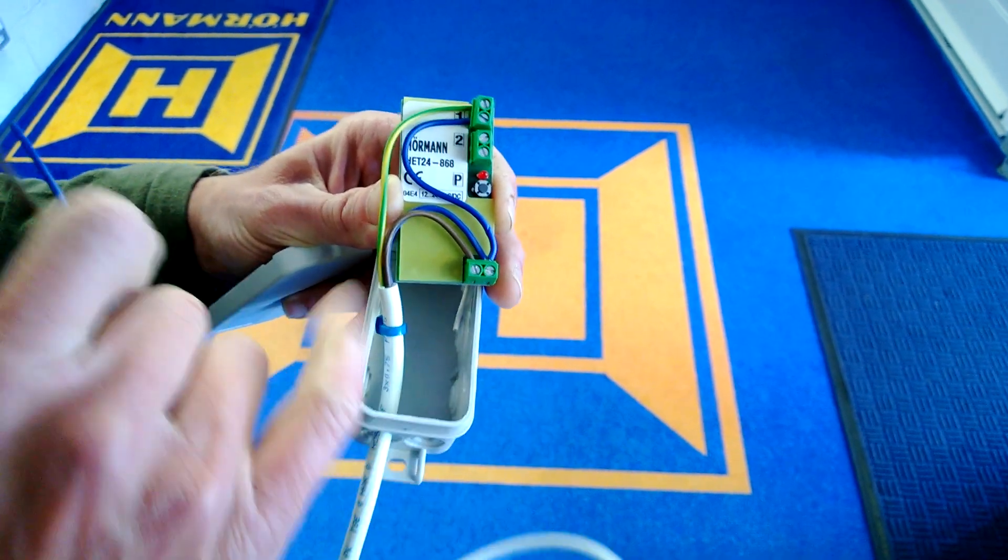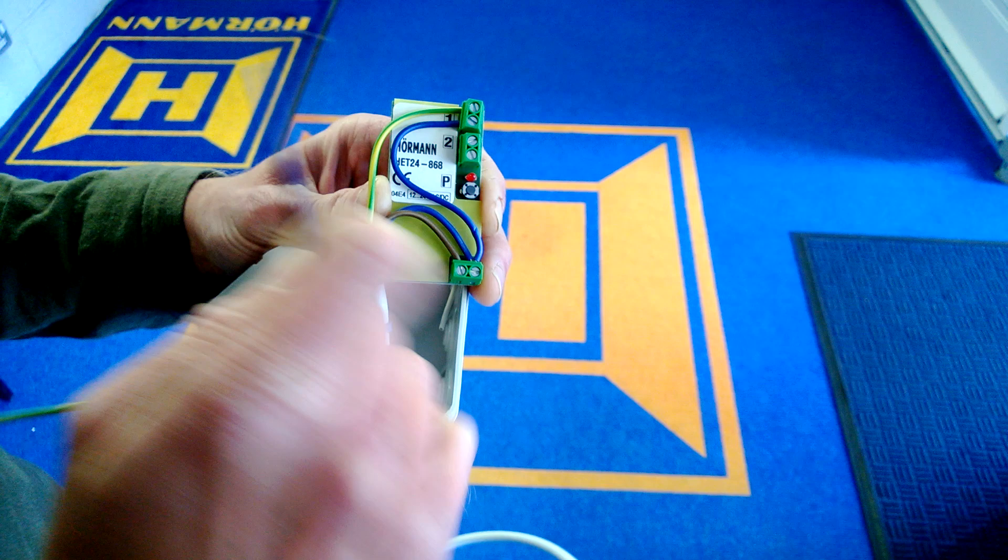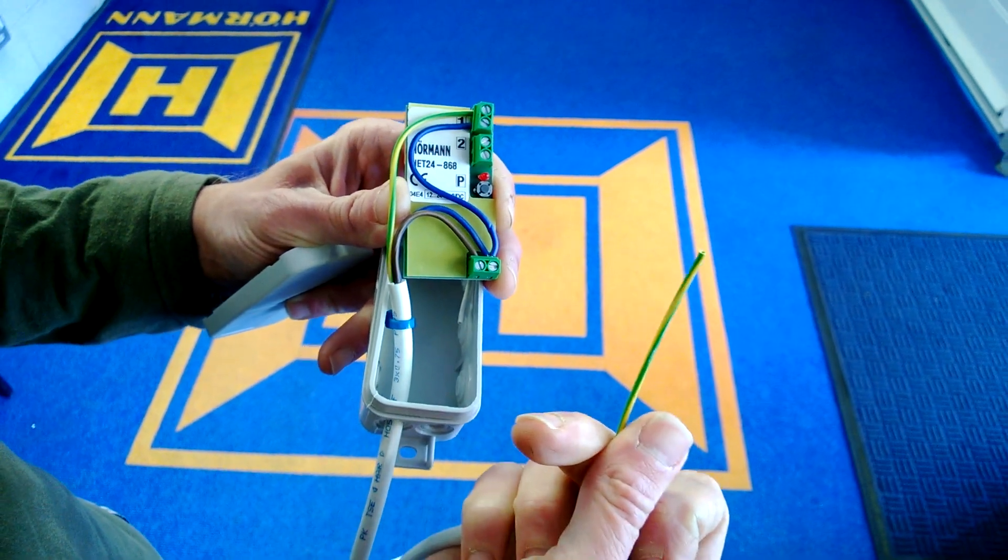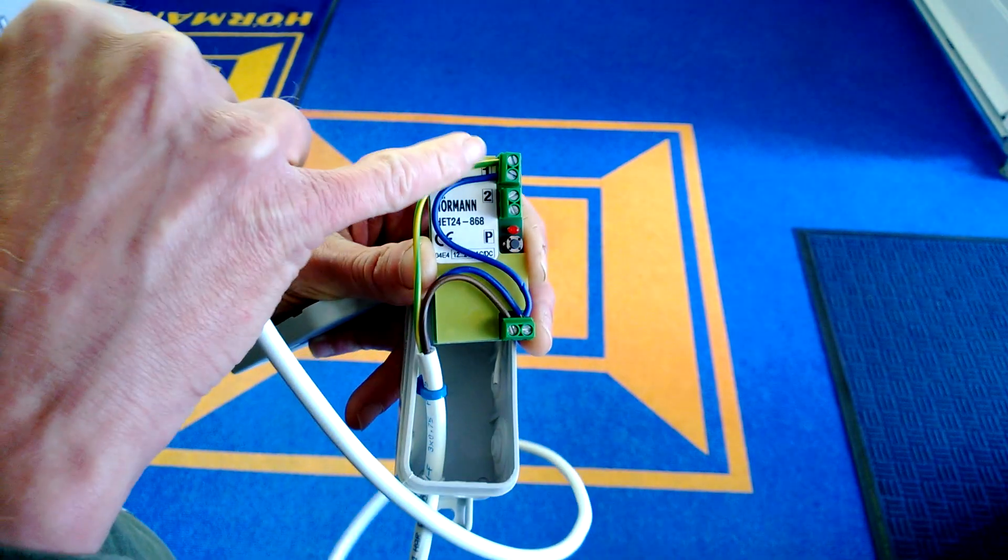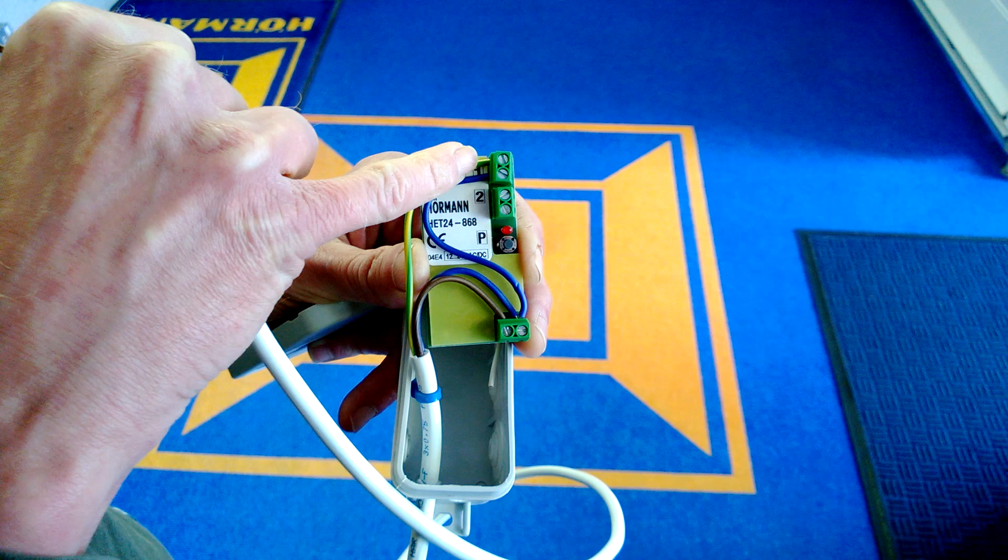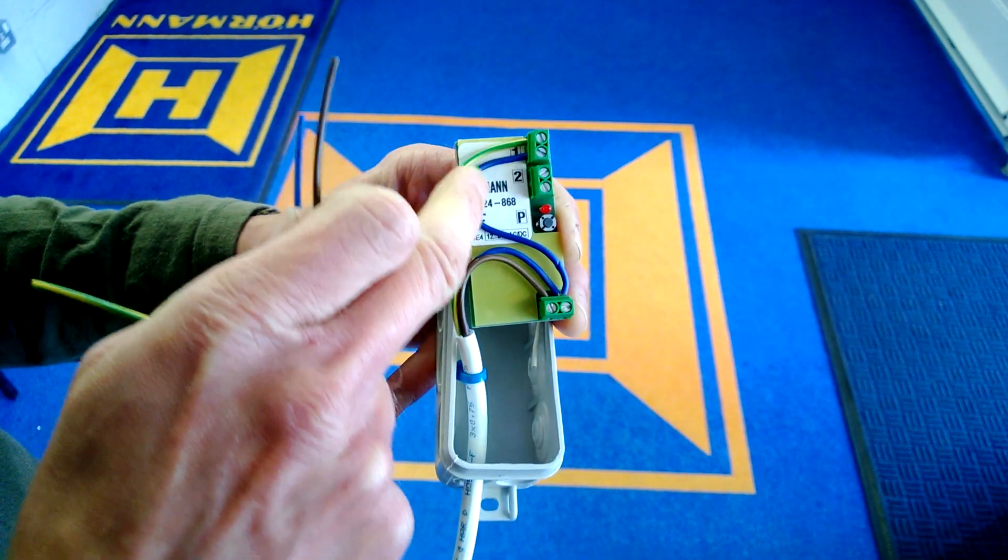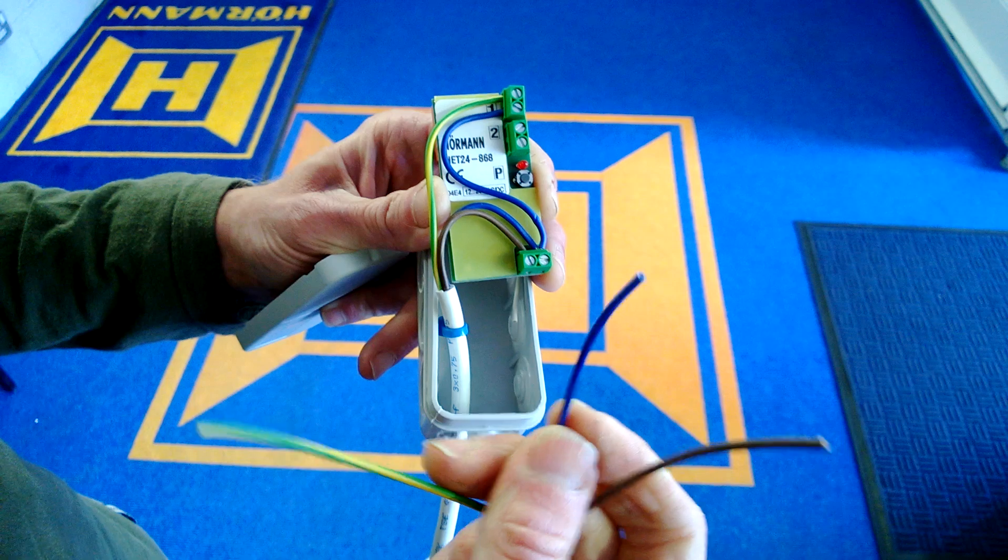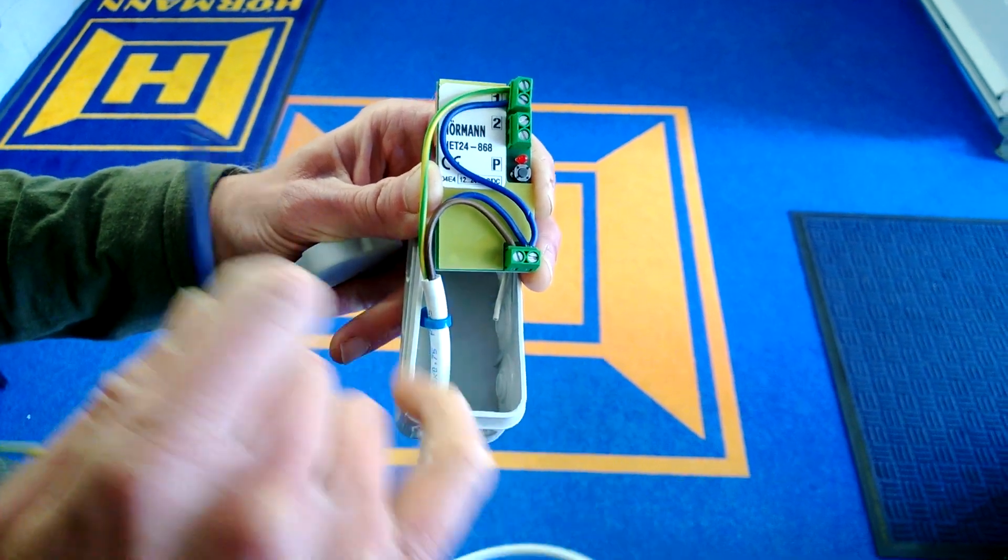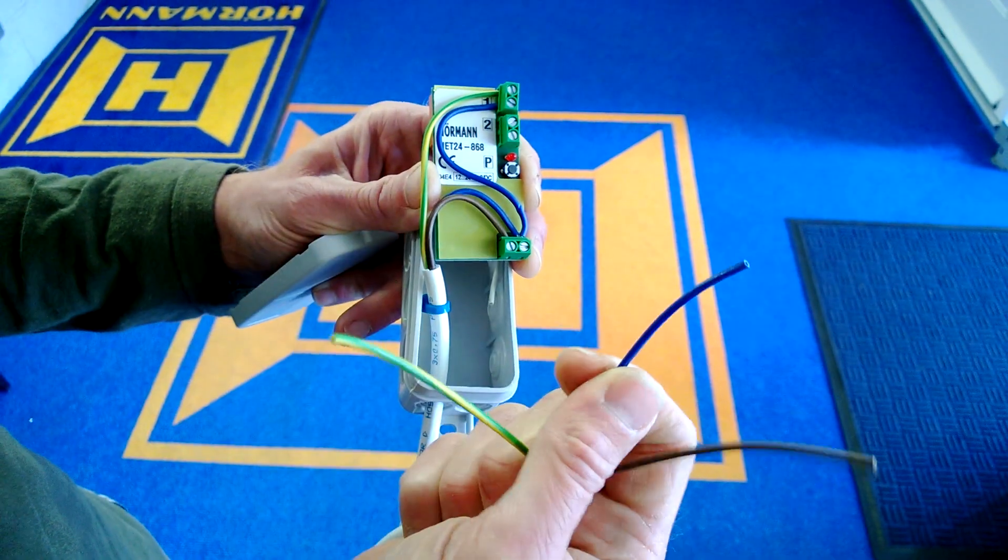We've got the contact going to the first contact, and then we're sharing the other contact with the zero volts. So we've taken a little bit of cable and we've taken a connection from there to the other side of the relay contact.